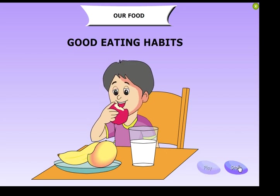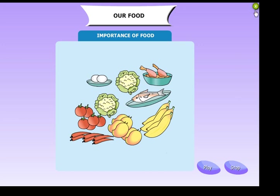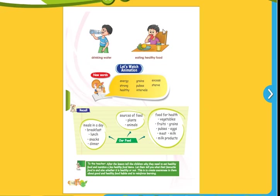So by this animation you have understood about the food. So let's continue. This is the words: energy, green, excess, strong, pulses, star, healthy, interval.